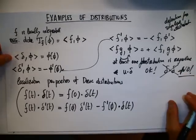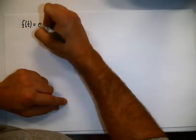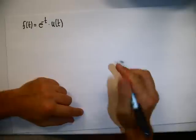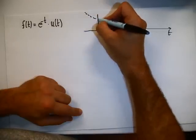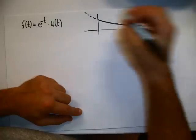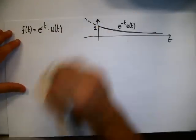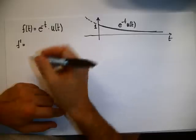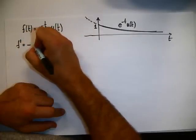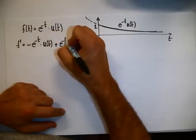Let's consider an example. Let's try to compute the derivative of f(t) = e^{-t} u(t). Formally, we know what this function is — it's an exponential function equal to one for t ≥ 0. Formally, we can try to do the derivative. We know already that this derivative is going to be equal to minus e^{-t} times u(t) — taking the derivative of e^{-t} times u(t) — plus e^{-t} times du/dt.